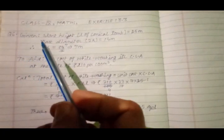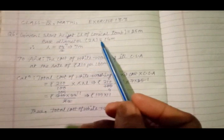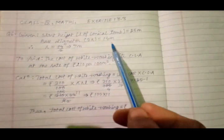Let's discuss question number 6. This time we are given slant height L of conical tomb equals 25 meter and base diameter 2R equals to 14 meter.